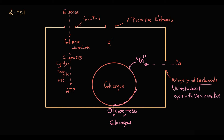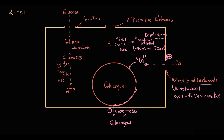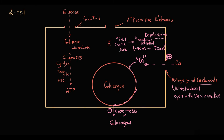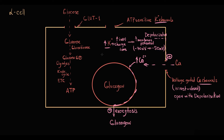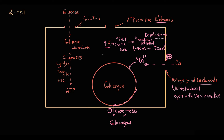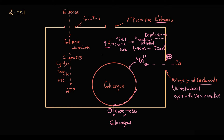Depolarization is the state when membrane potential increases. Membrane potential at rest is minus 70 mV. To increase membrane potential, the amount of intracellular positively charged ions inside the cell has to increase. Alpha cells have potassium channels, so the way to increase positively charged ions is to increase the amount of potassium inside the cell. Since potassium concentration inside the cell is greater than outside, if the channel is open, potassium flows out of the cell.